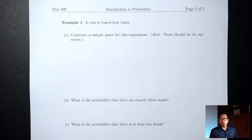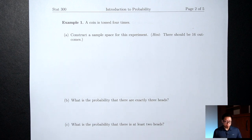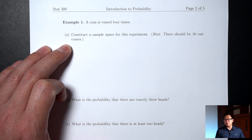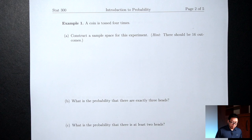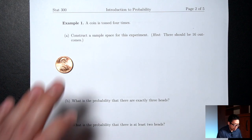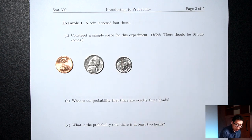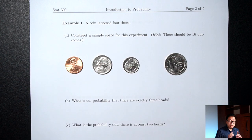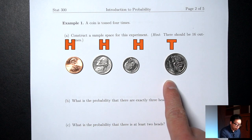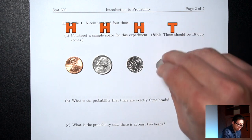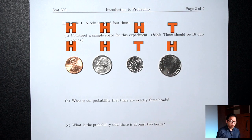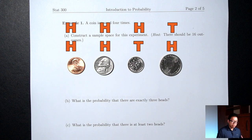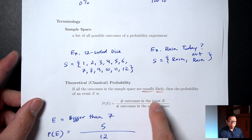Example 1: A coin is tossed four times. Part A: construct a sample space. When I toss a coin four times, I don't know for sure what's going to happen, so the sample space is a list of everything that could happen. I'm going to think of this as four separate coins — a penny, a nickel, a dime, and a quarter — because I want each outcome to be distinct and equally likely so the classical probability formula applies.